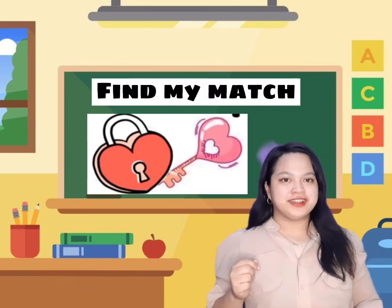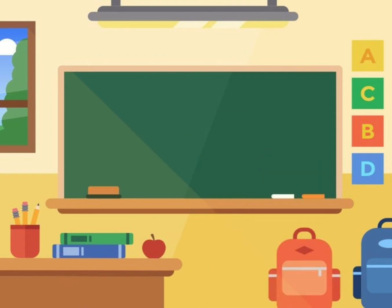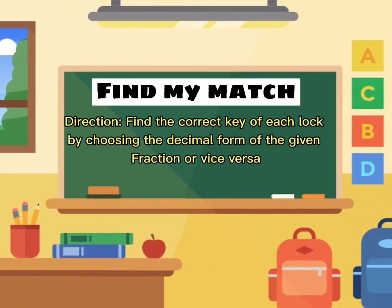The activity is called Finder Match. The direction is: find the correct key for each lock by choosing the decimal form of the given fraction, or vice versa.